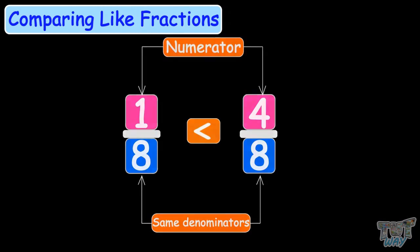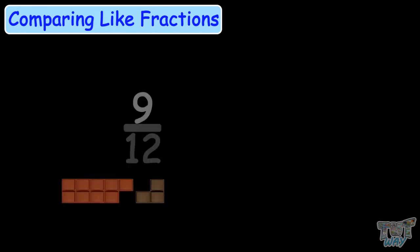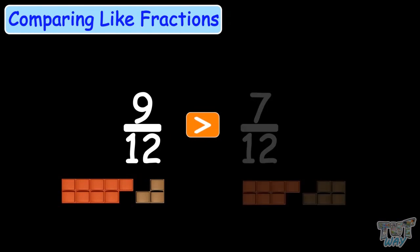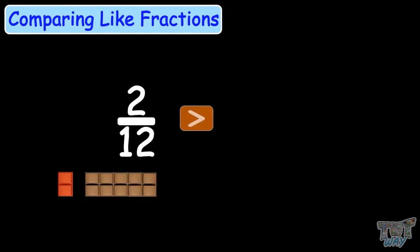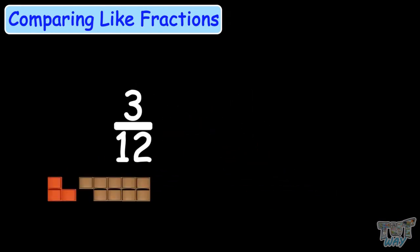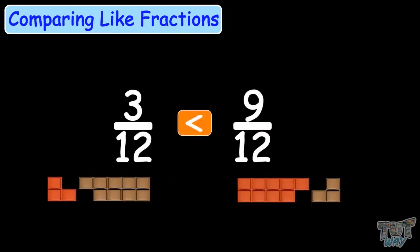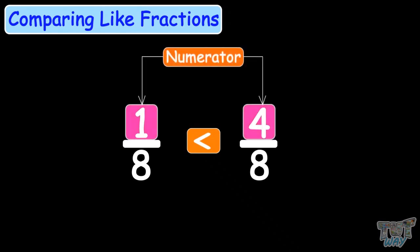Here we have more examples. 7 by 12 is greater than 2 by 12. 9 by 12 is greater than 7 by 12. 2 by 12 is greater than 1 by 12. 3 by 12 is less than 9 by 12. Now you know how we compare like fractions and why we only need to compare numerators while comparing like fractions.